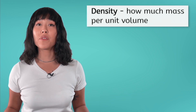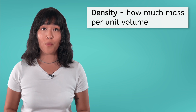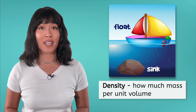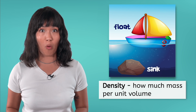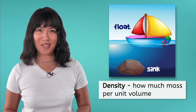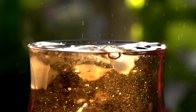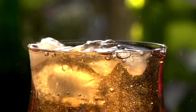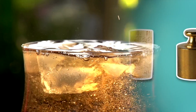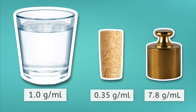In our previous lesson, we reviewed the concept of density, which tells us how much mass per unit volume an object has. One easy way to predict whether an object will sink or float is to consider its density. We know that ice floats in water and other beverages because ice is less dense than the liquid it is placed in. What about a piece of cork and a small iron weight? Let's consider the density of each before we make a prediction.